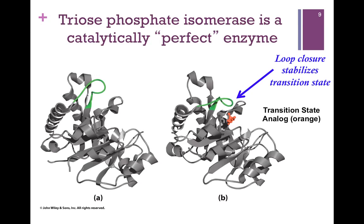The enzyme that catalyzes that isomerization, triosephosphate isomerase, is a good example of a catalytically perfect enzyme. It operates at the diffusion-controlled limit, so as soon as it finds substrate, it binds it and forms product. You can see the ribbon diagram here — on the left it's unbound, on the right we see the transition state analog in orange, and you can see the loop closure in green over that molecule. There is definitely a conformational change that occurs in this enzyme.